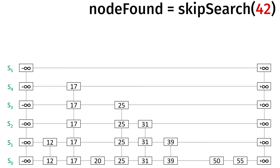But let's say that's not the case — say it doesn't exist. So the first thing we have to do is search for the largest key less than or equal to 42. We start up here and we always drop down a level first, then try to scan forward as much as possible. We can go over to 17 because it's less than or equal to 42. Positive infinity is not, so now we have to drop down.